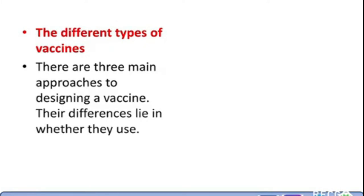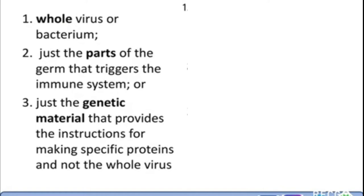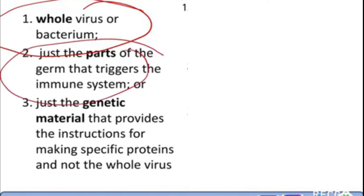Let's understand the different approaches one by one. The first is the whole virus or bacterium method, where the whole virus is taken to develop a vaccine. The second is using just the parts of the germ that trigger the immune system — for example, in coronavirus, the spikes which are also proteins are extracted in order to develop a vaccine. The third type uses just the genetic material — DNA or mRNA — that provides the instruction for making specific proteins, not the whole virus.